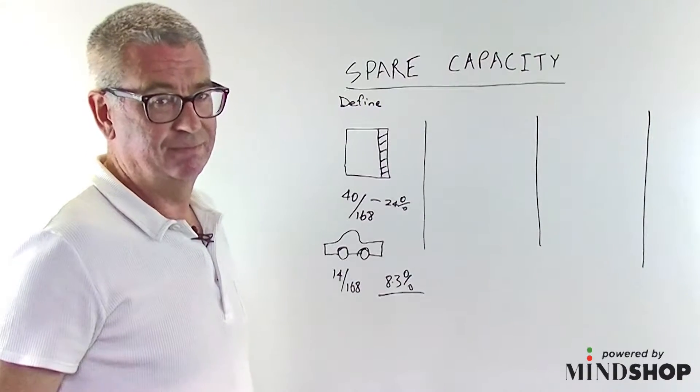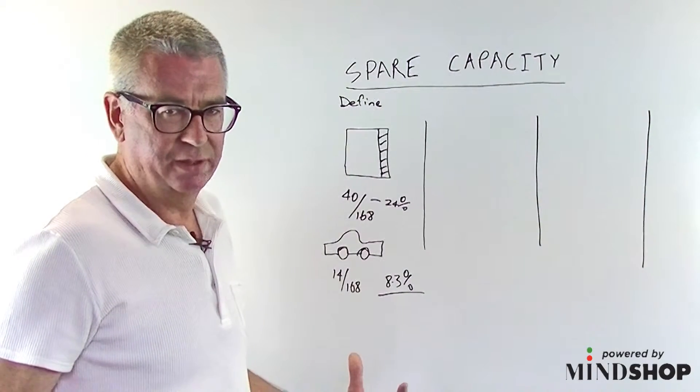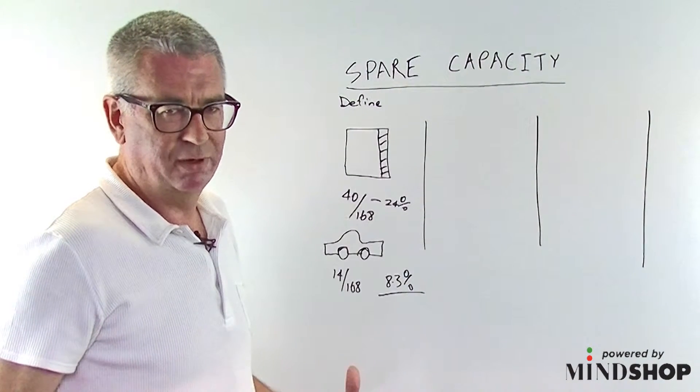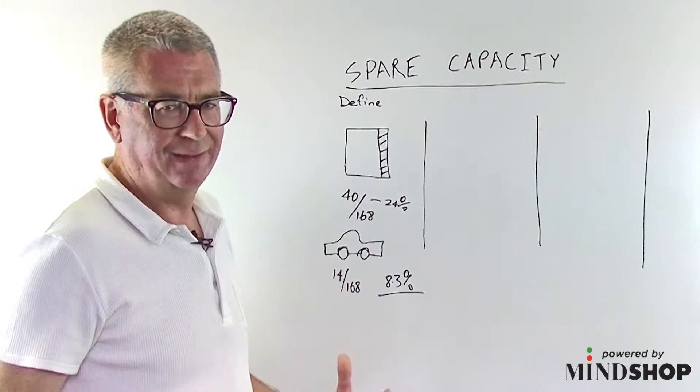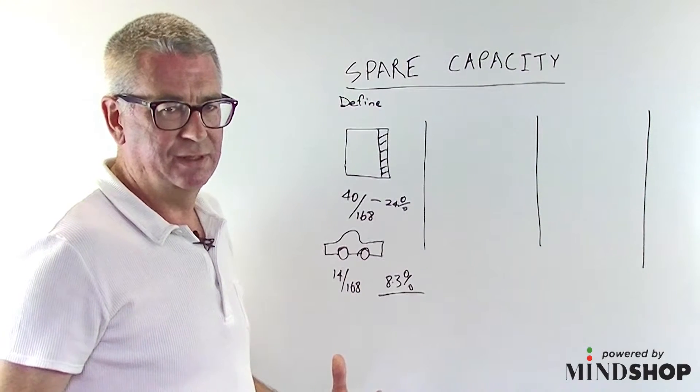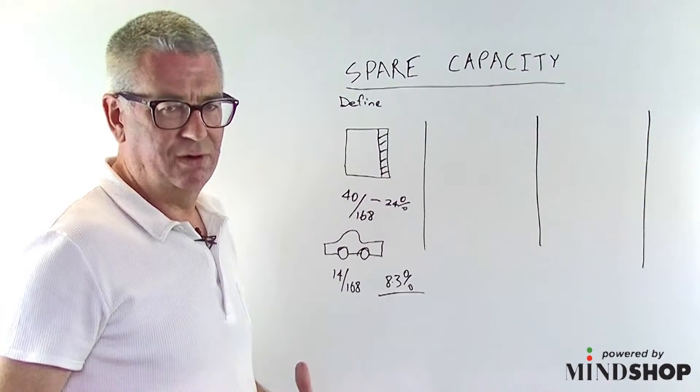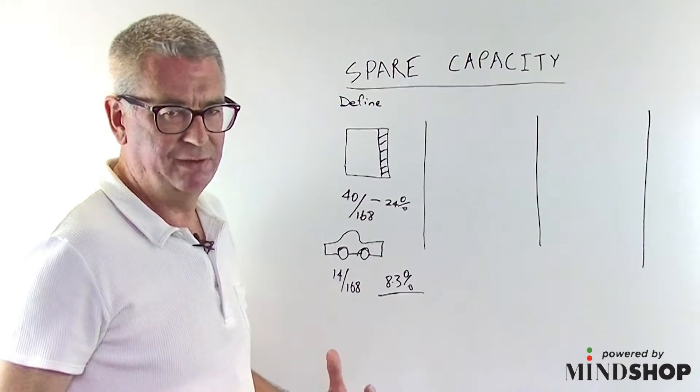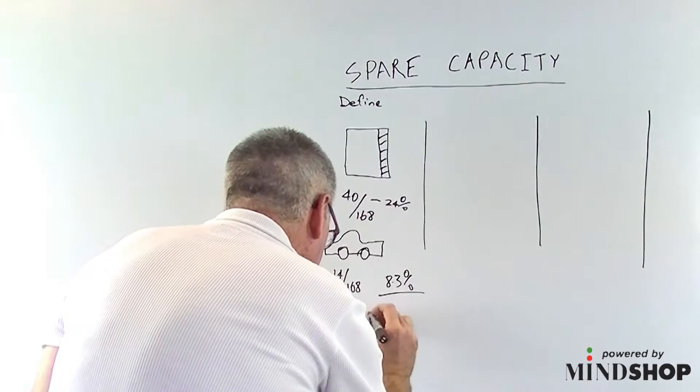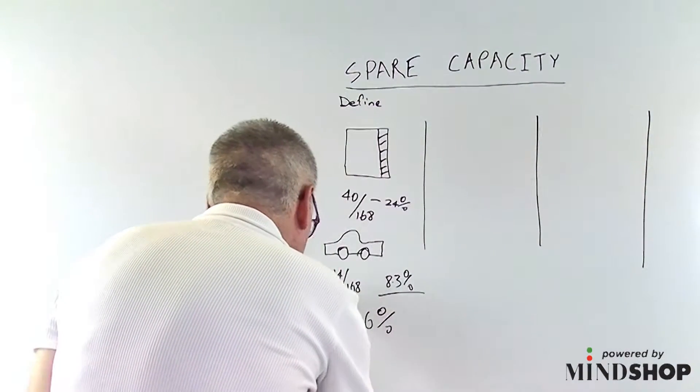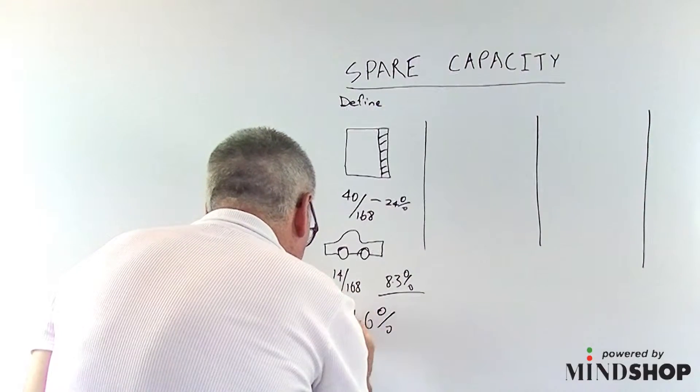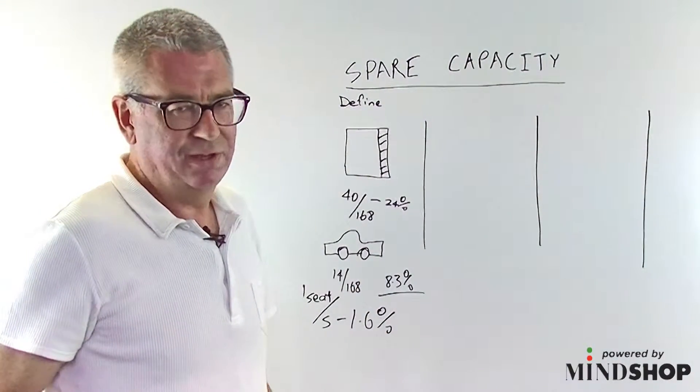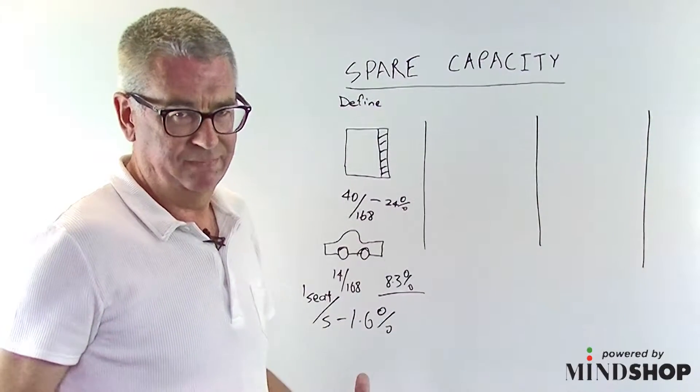But it gets worse because how many seats are in the average car? Five. How many seats are typically occupied? One. So if we apply that, it really takes the use of capex of the second most expensive thing that most families buy down to, wait for it, 1.6%. Now I think you'll agree that's pretty ordinary use of capex.